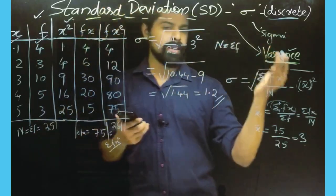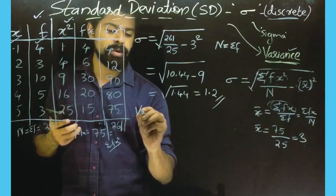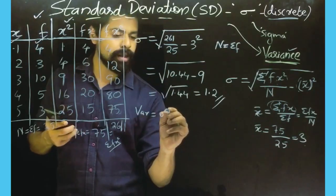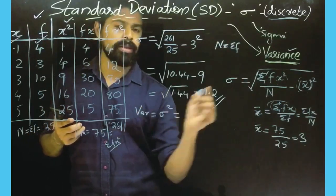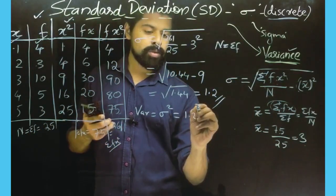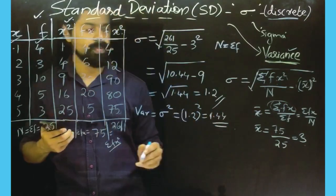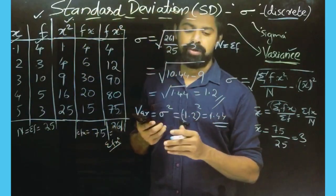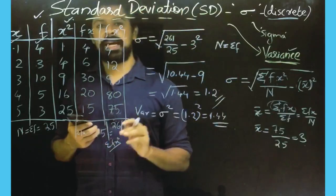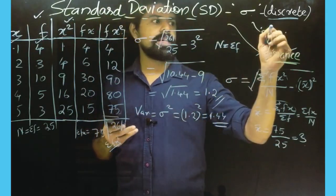Sigma equals 1.2 — that is the standard deviation for the discrete frequency data using this formula. Now we can also find the variance, which equals sigma squared. Variance equals 1.2 squared, which is 1.44. So variance equals 1.44 for this discrete frequency data. Now let's look at the continuous frequency data.